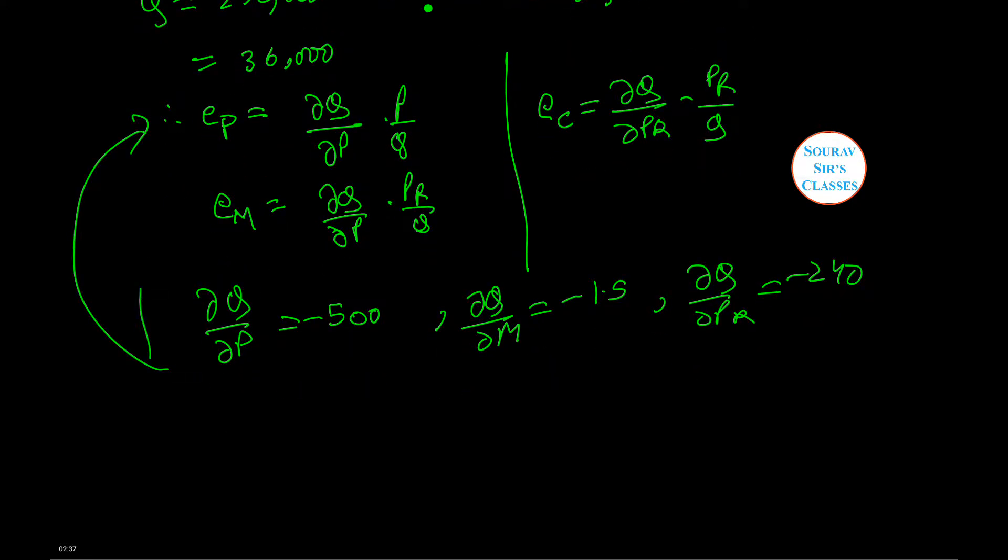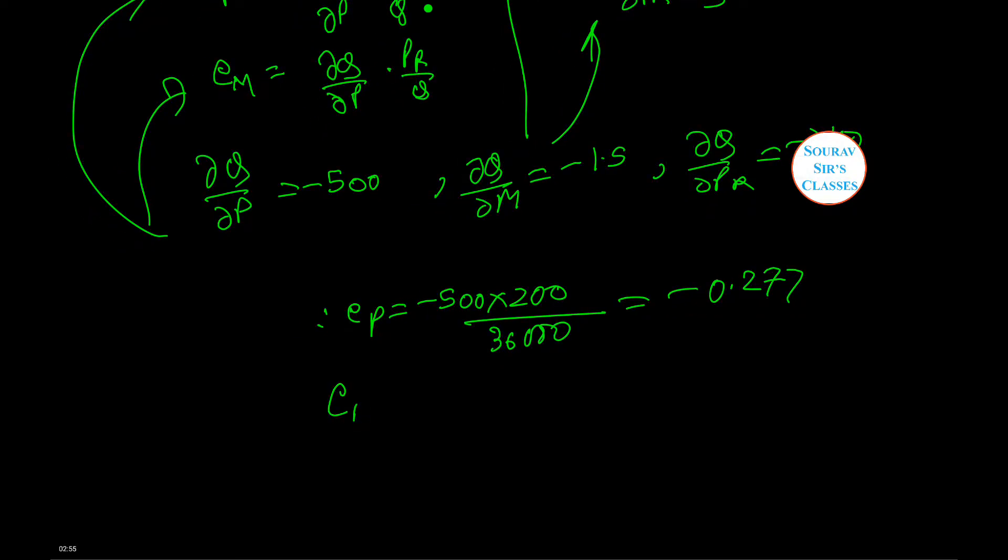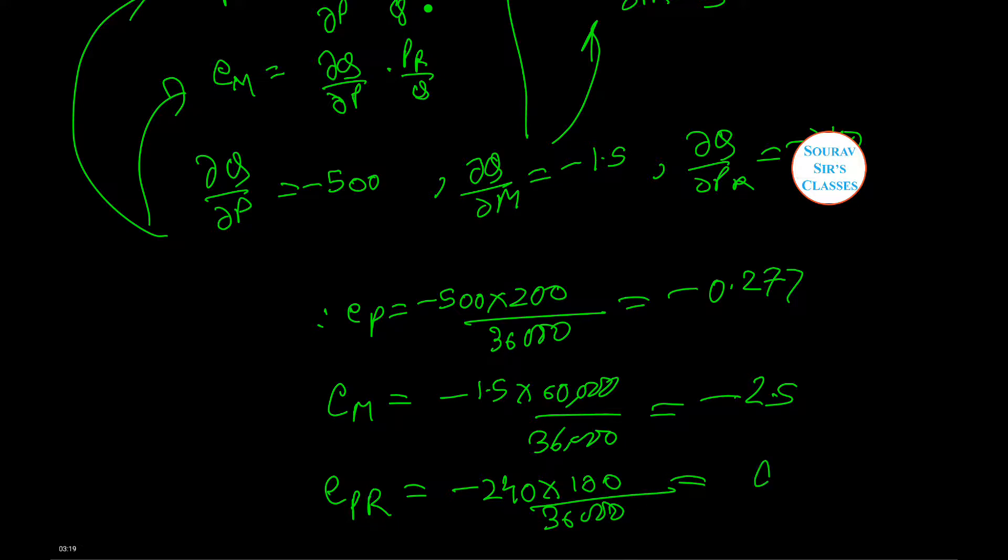Substituting all these values in the respective equations, we have EP equals minus 500 into 200 by 36000, which equals minus 0.277. EM equals minus 1.5 into 60000 divided by 36000, which comes down to minus 2.5. And EPR equals minus 240 into 100 by 36000, which is 0.3.